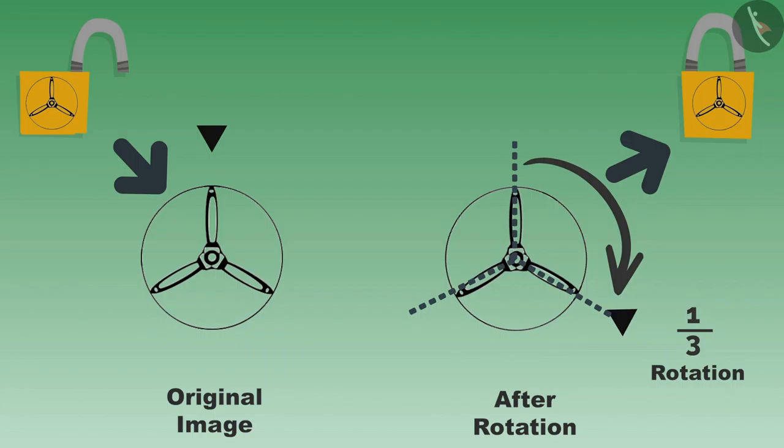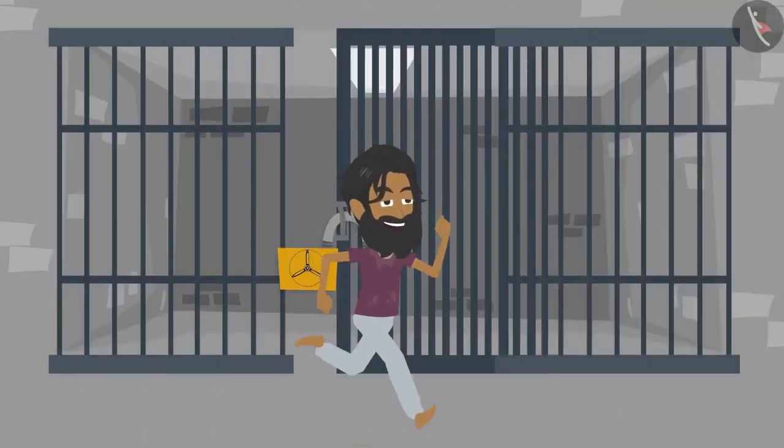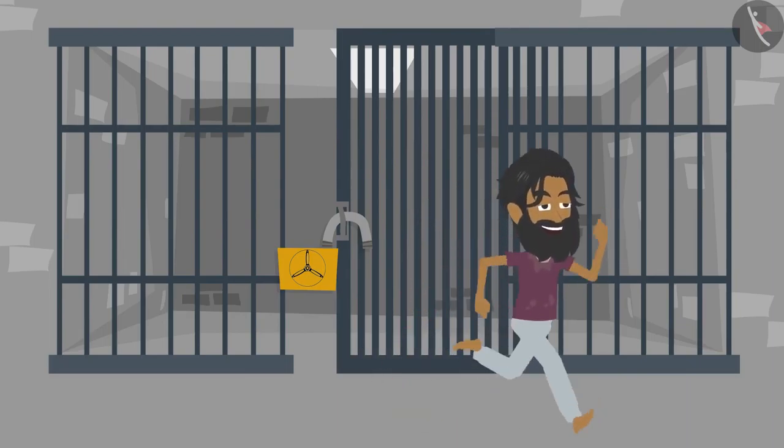Due to this, it was not possible to find whether the lock was open or closed. Since this lock has one-third rotational symmetry, the jailer didn't realize that it was left open and the prisoner got a chance to run away.